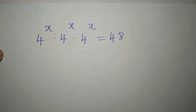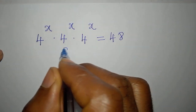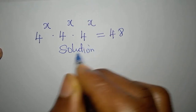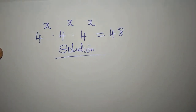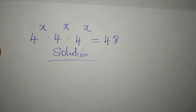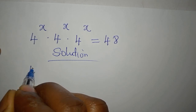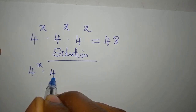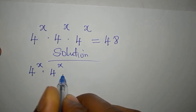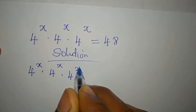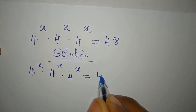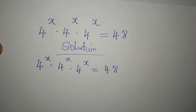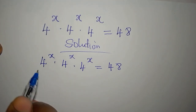Hello everyone, let's provide the solution to this problem. We have 4 to the power of x times 4 to the power of x times 4 to the power of x equals 48.